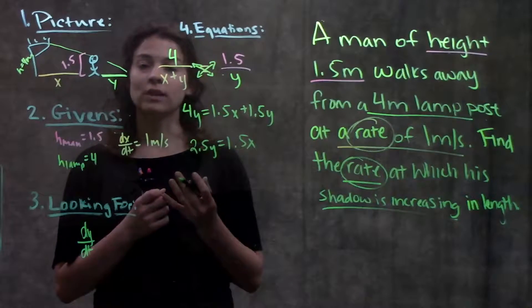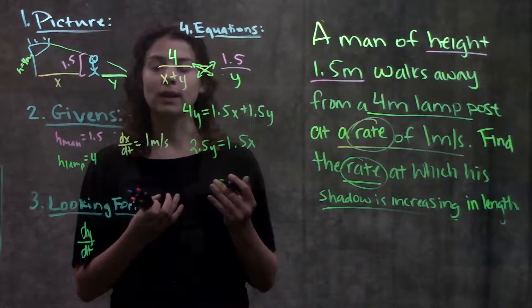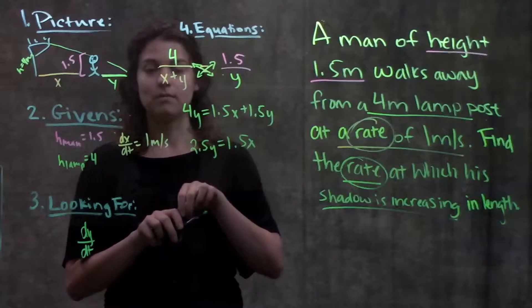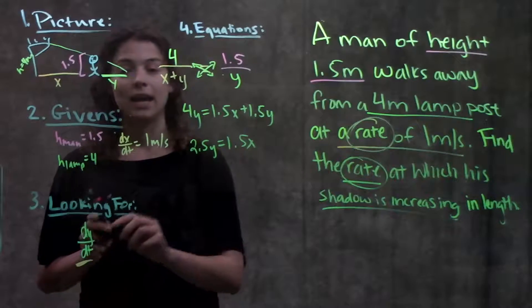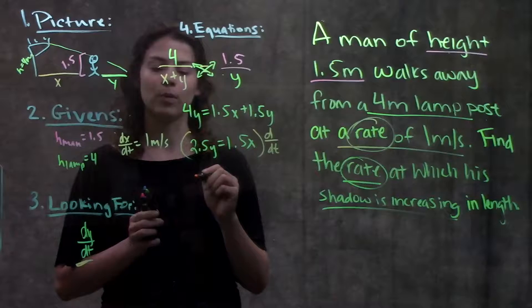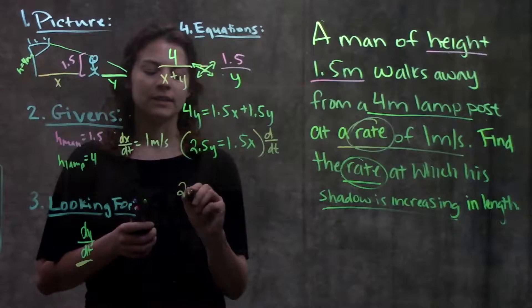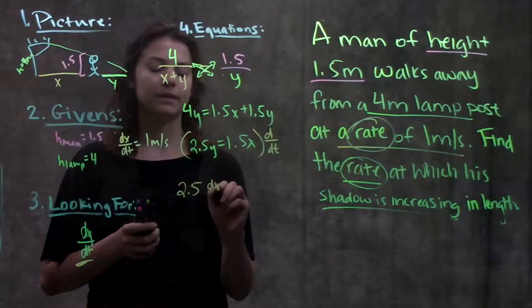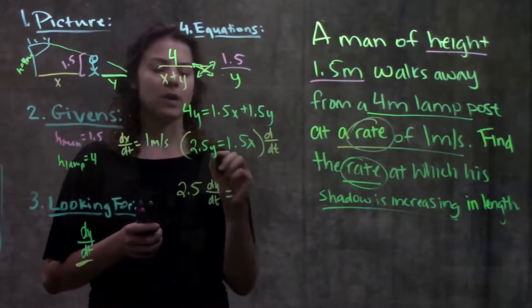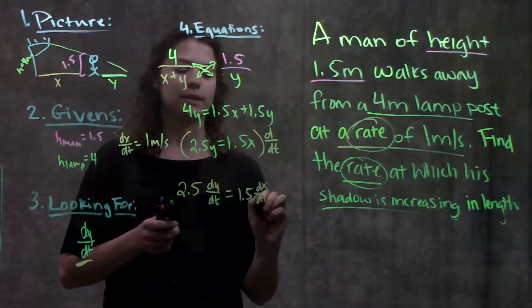Okay this equation and it's only in terms of two variables there's not much more simplifying I can do. So from this point I can go ahead and take the derivative because remember what I'm looking for is dy over dt. So I take the derivative of both sides on the left here the derivative of 2.5y this gives me 2.5 times dy over dt equals on the right same thing 1.5 dx over dt.